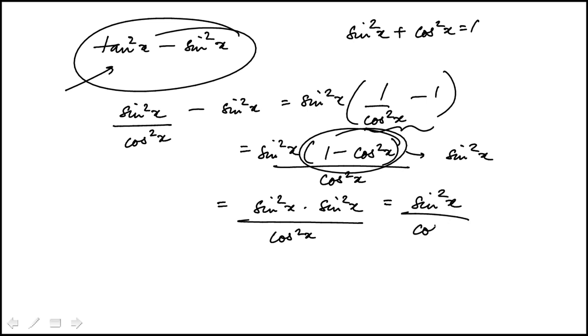And this can be written as that. And this piece is tan square x. So if I look at the answer choices, this matches with e.